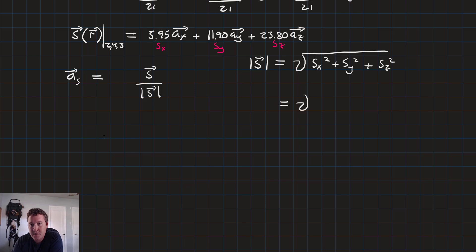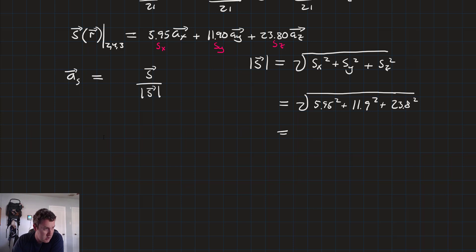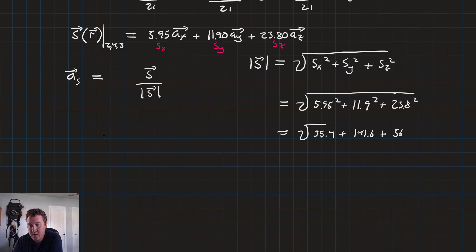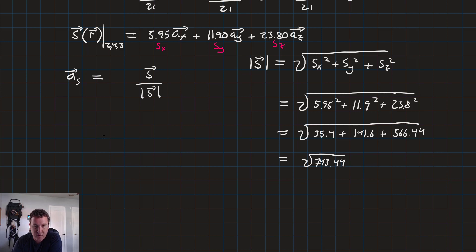So the magnitude of S is going to be equal to the square root of 5.95 squared, plus 11.9 squared, plus 23.8 squared. That's equal to the square root of 35.4 plus 141.6 plus 566.44, which is equal to the square root of 743.44. So finally, the magnitude of S is equal to 27.27.